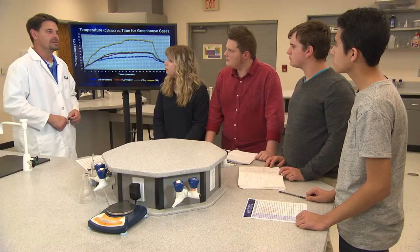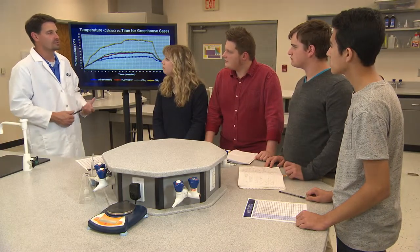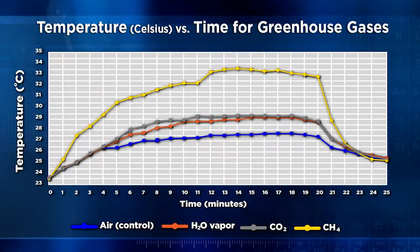All of the gases got warmer until we turned off the light, and then they started cooling down. That's right, Nath Krishna. All the gases showed the same general behavior — they all heated up and then cooled down as expected. But how do the four gases differ in terms of their behavior?